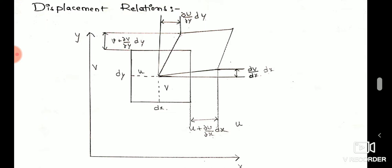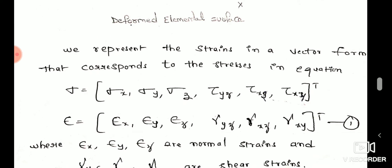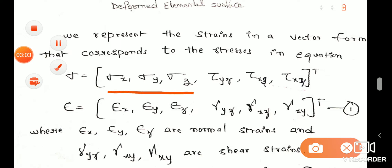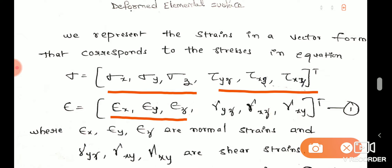We have three different components. These are the normal stresses and the shear stresses. In the same way, we consider the strain and displacement relationship, accounting for the normal stresses and shear stresses along the x and y axes.